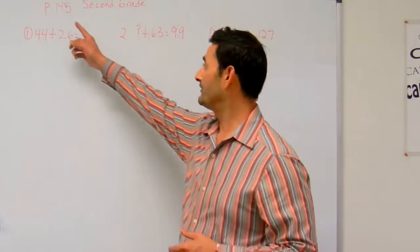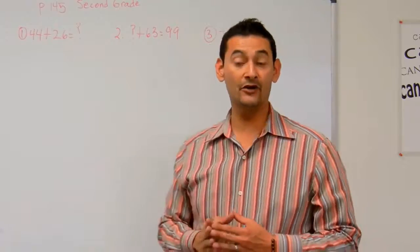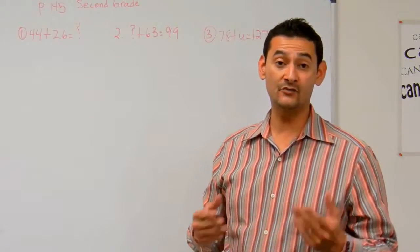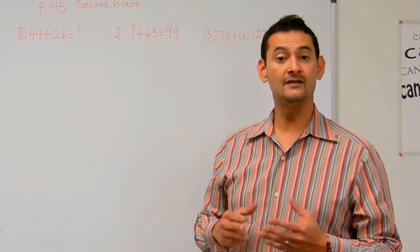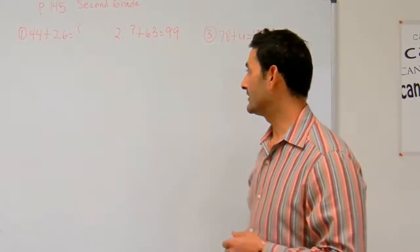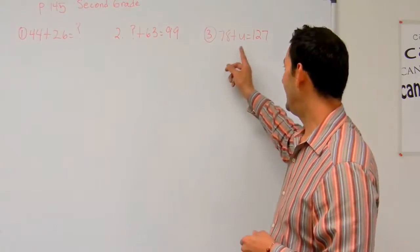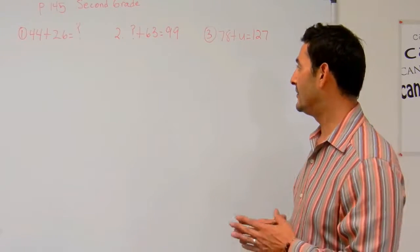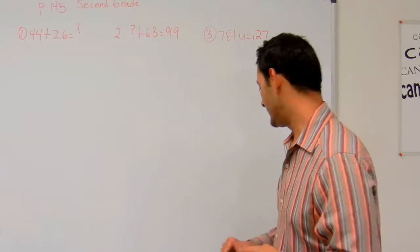Let's go ahead and work on page 145 in your second grade hybrid math workbook. We're going to be solving for the unknown number. Sometimes we'll have question marks, sometimes we'll have the U, and that symbolizes the unknown number.